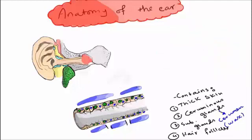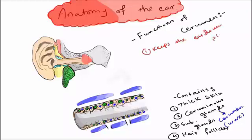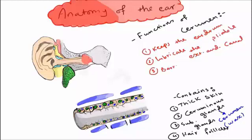Let's see the functions of the ear wax. It keeps the ear drum pliable. It lubricates the external auditory canal. And it acts as a barrier for trapping foreign bodies, fungal spores, dust, and also acts as bacteriocidal. It prevents the growth of bacteria.